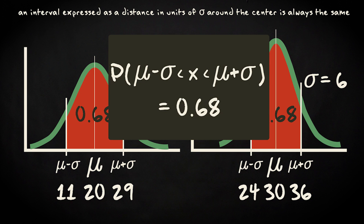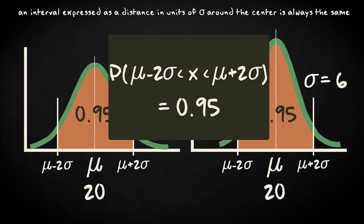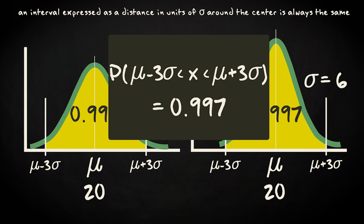It's always the case for any normal distribution, regardless the values for mu and sigma. Now, if you'd move on and take for instance an interval not 1 sigma but 2 times sigma around the mean, the probability for that interval appears to be 0.95. And when taking 3 times sigma, it turns out to be 0.997.